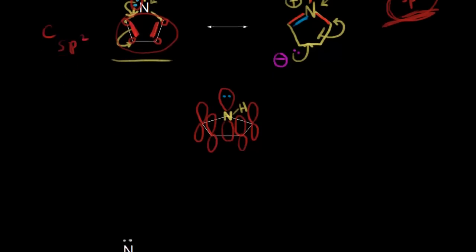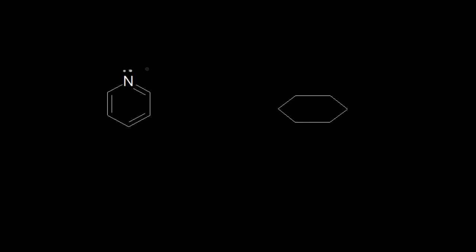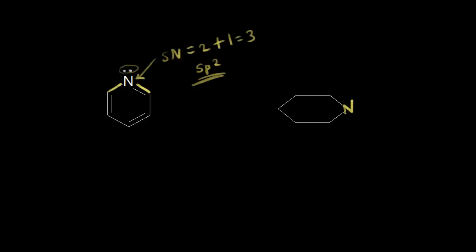Let's do one final example. Calculating the steric number of this nitrogen as drawn: the steric number equals the number of sigma bonds — here's one sigma bond, and in the double bond one is a sigma — so two sigma bonds, plus one lone pair of electrons. Two plus one gives a steric number of three, implying sp2 hybridization. So this nitrogen is sp2 hybridized and has a p orbital.